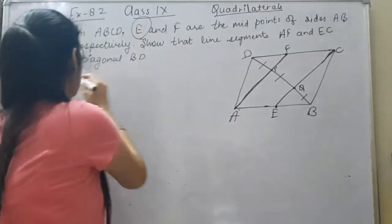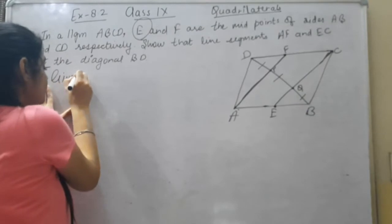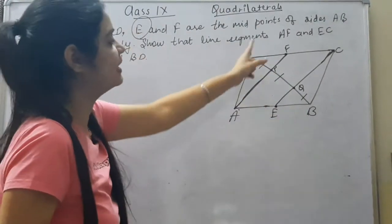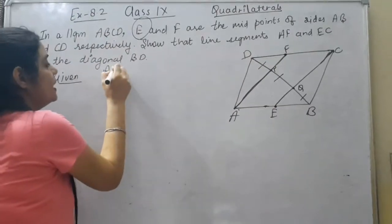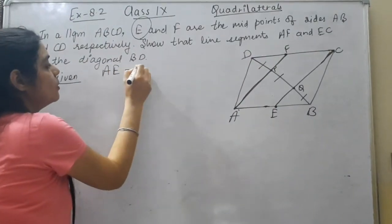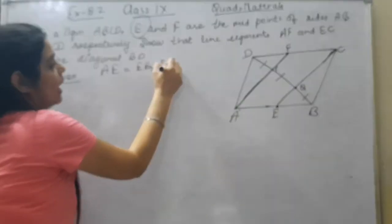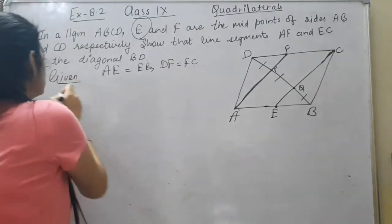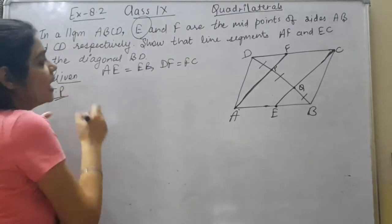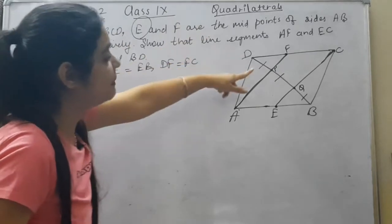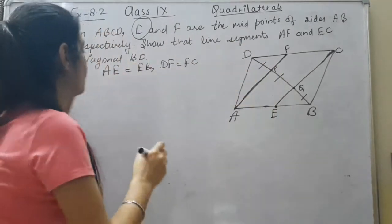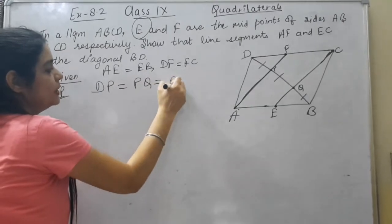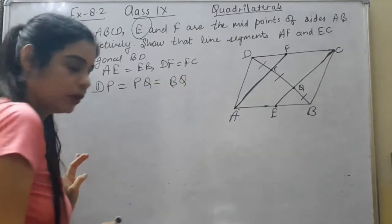What do I write in the given? I will write that E and F are the midpoints, meaning AE = EB and DF = FC. And in the proof, I have to show that DP = PQ = BQ.